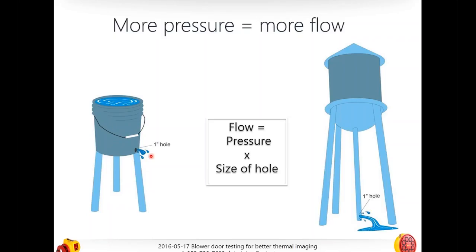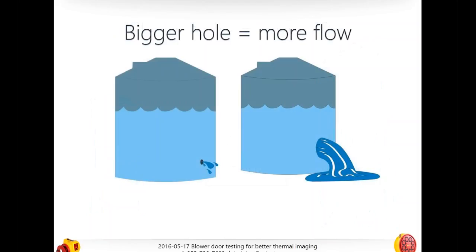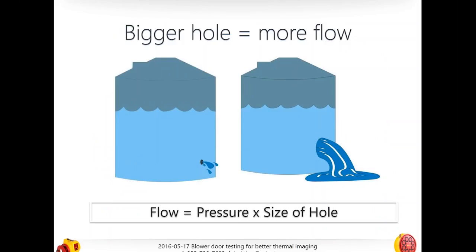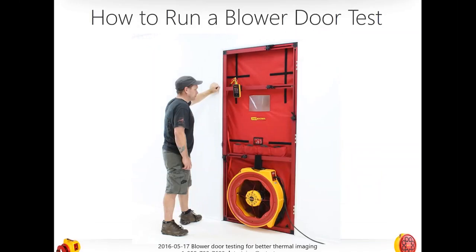Here are some great examples: a five-gallon bucket with a one-inch hole doesn't have much pressure — it moves a small amount of liquid. But the same hole at the bottom of a big municipal water supply tank gets a lot more flow. And comparing two tanks with the same pressure, one with a smaller hole and one with a bigger hole — you get much more flow through the bigger hole. Same principle applies to heat and air.